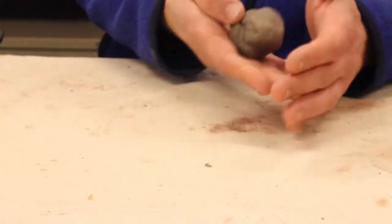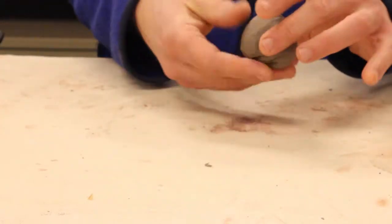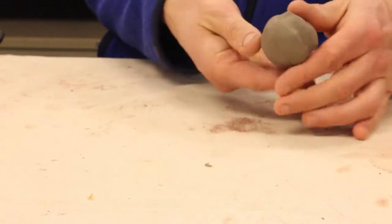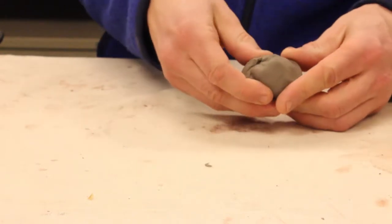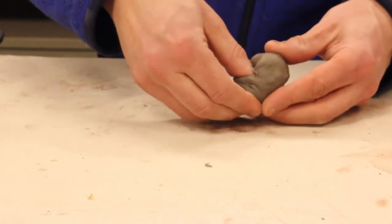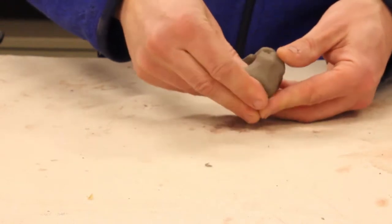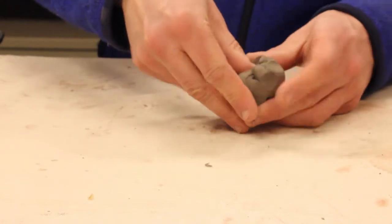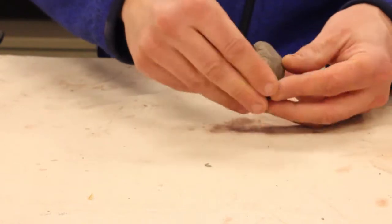So we're going to start by just taking a ball and cupping our hands and making it round. You'll put your thumb into the top and then you press and you turn as you go. So you're kind of compressing the bottom of that.